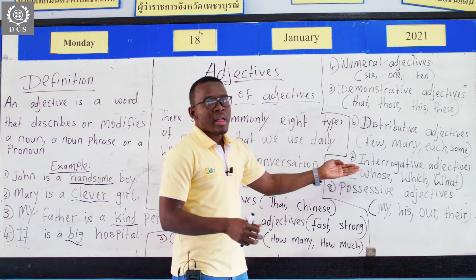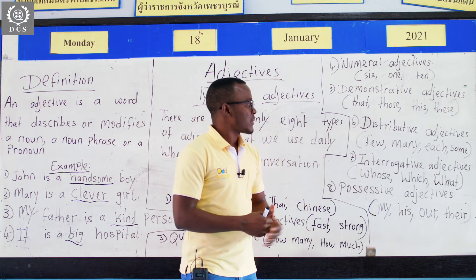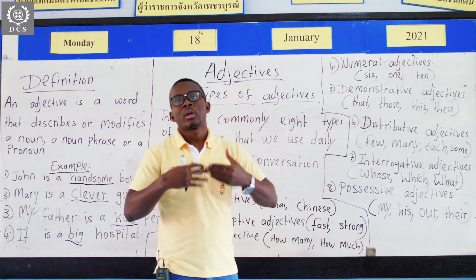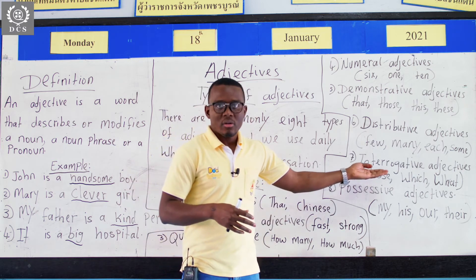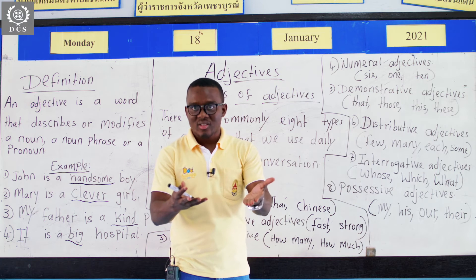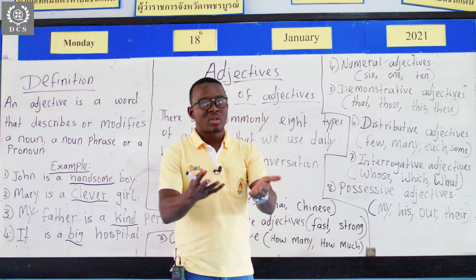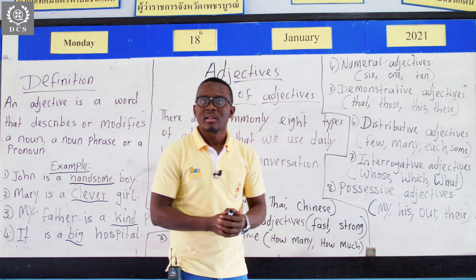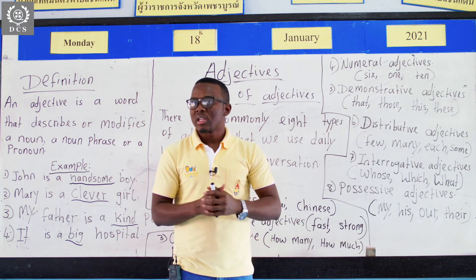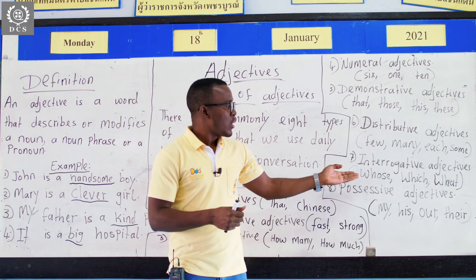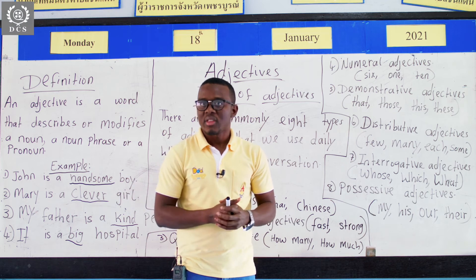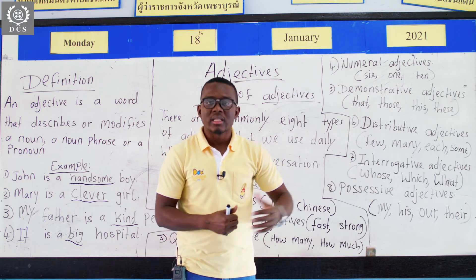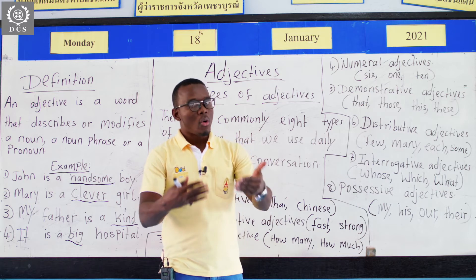And interrogative adjectives. This one, like the word says, is used to interrogate — to ask, to interrogate others. So we have whose, which, what. Like: what drink do you want? Whose book is that? Whose pencil is this? So they are used for questioning.